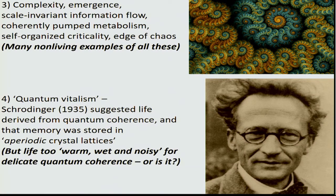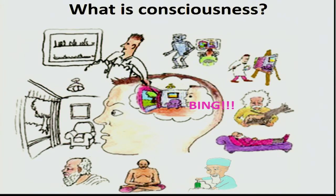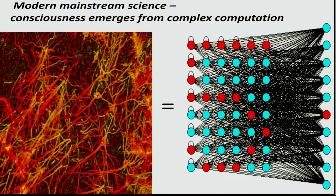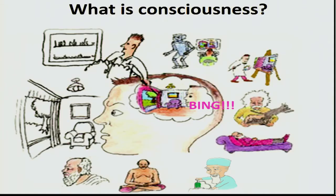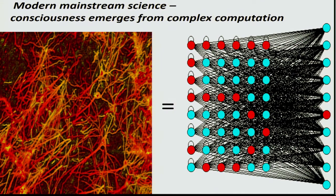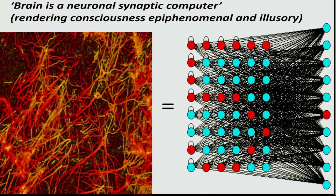The other question is: what is consciousness? We take it for granted that when we open our eyes, the world out there appears in our head — being is meant to imply conscious awareness, having an experience. This is studied by neuroscientists, artificial intelligence people, roboticists, artists, physicists, psychiatrists, anesthesiologists, meditators, and philosophers. Modern mainstream science believes that consciousness emerges from complex computation among neurons, and the brain is a neuronal synaptic computer, but this renders consciousness epiphenomenal and illusory. It doesn't really work.